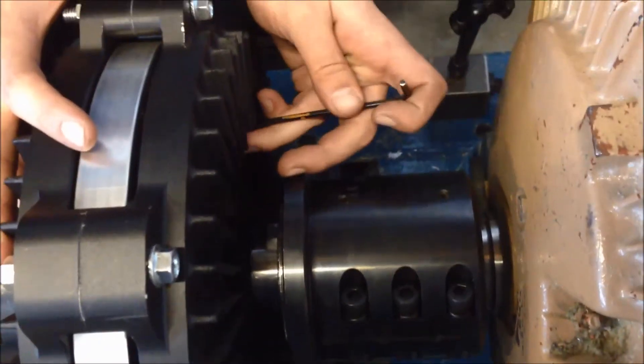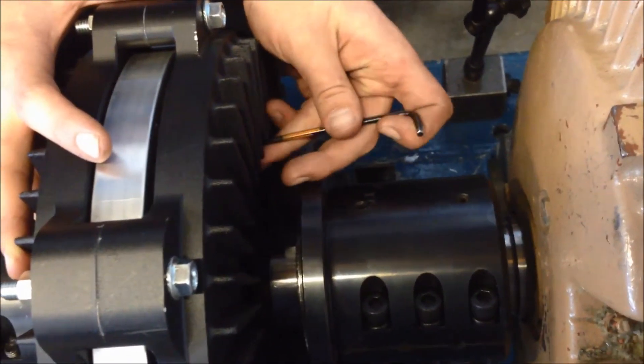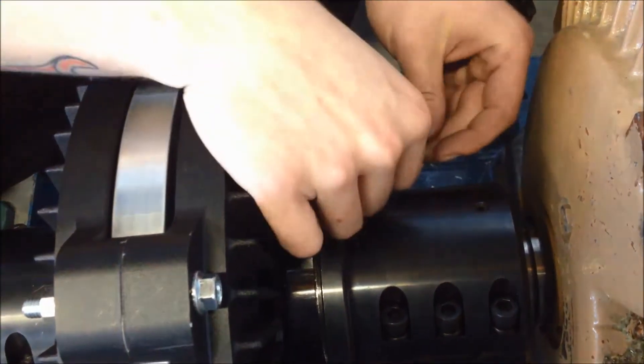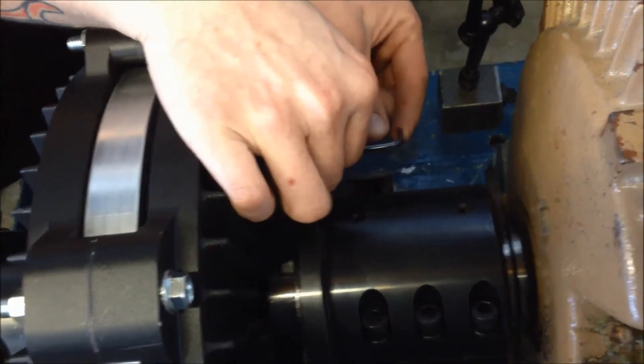Screw in the four jack screws on the motor side until they come in contact with the magnet rotor. Then unscrew each jack bolt two complete turns counter clockwise.